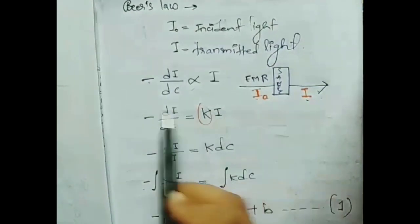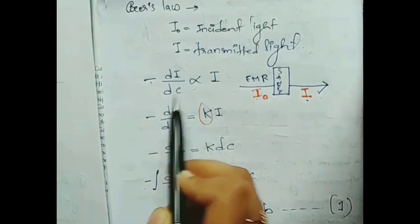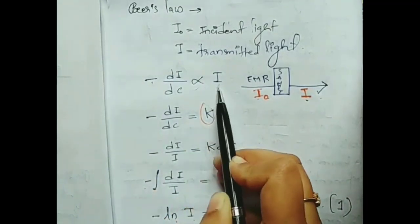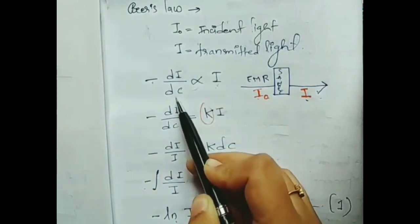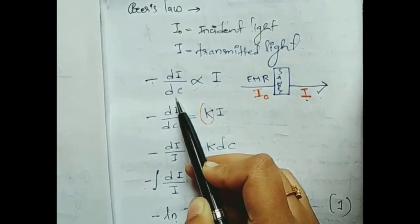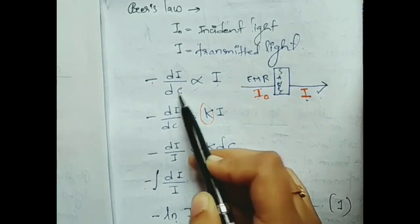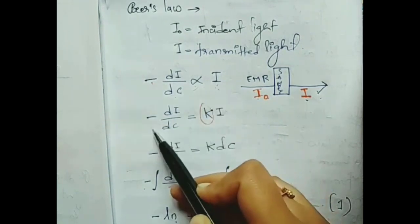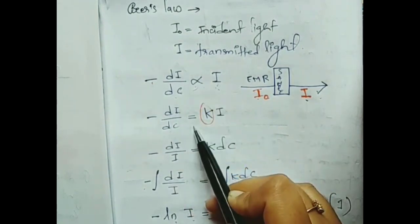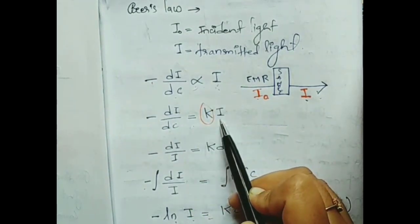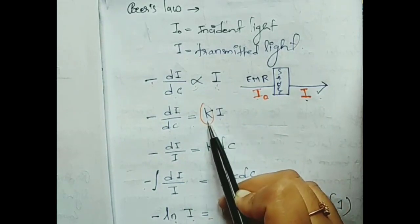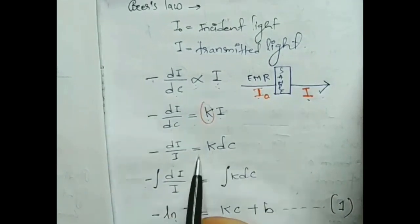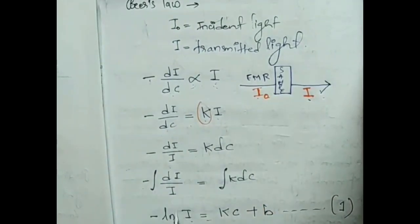I is your transmitted light. Minus dI by dC is directly proportional to I. This is as per the statement of Beer's law, which says that the decrease in the intensity of incident light with concentration is directly proportional to the intensity of incident light. So minus dI by dC equals KI, introducing the proportionality constant K.